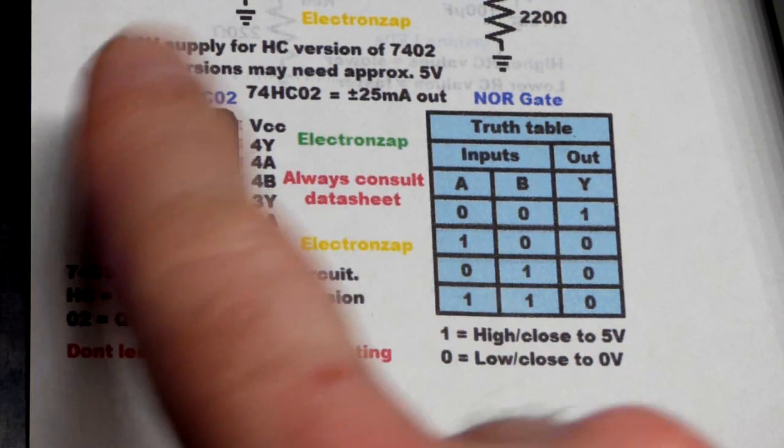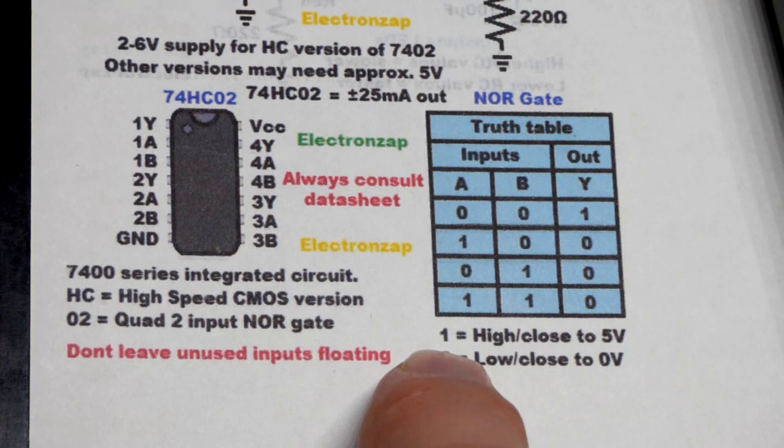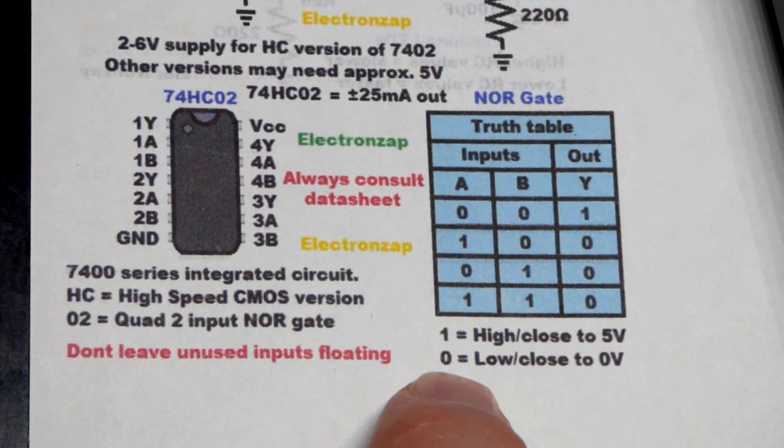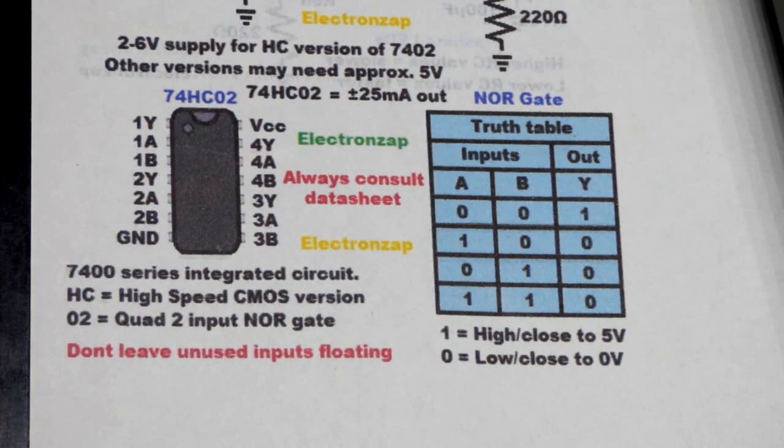We're using 5 volts to power the circuitry. Close to 5 volts is considered high, or 1 if you're using that kind of system. And when it comes to zero or low, it's close to zero volts in this circuit. Make sure you check out one of the other videos I've posted on the screen and check out the links down below. I'll see you in the next video.